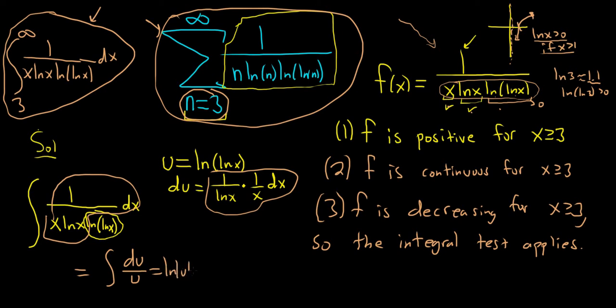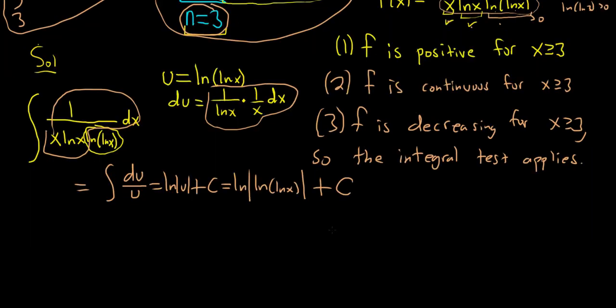And so this is ln, natural log, and then u was ln of ln of x. Wow, really crazy answer, plus c. Okay, let's just now go through as a formality and finish the problem. I say formality because at this point it might be clear that this should diverge, but let me show you why.